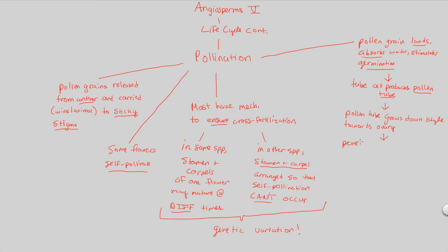As we're going towards the ovary, there's a structure we have to penetrate through. The pollen tube penetrates through a specific structure known as the micropyle. The micropyle is a pore in the ovule integuments — remember, integuments are tissues that surround the ovule as protection. There is an opening, a pore, that the pollen tube pushes through going into the ovule, and that is the micropyle. It leads us closer and closer toward the egg cell.